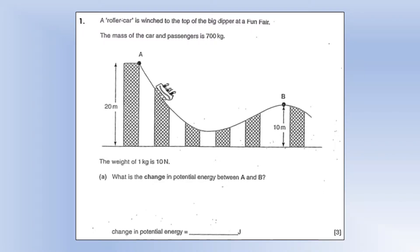We've got a roller car and it's winched to the top of a big dipper at a funfair. The mass of the car and the passengers is 700 kilograms. The weight of 1 kilogram is 10 newtons, so it's basically saying g equals 10.